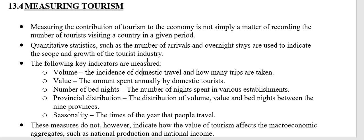Other indicators used to measure the volume of domestic travel include the incidence of domestic travel — how many trips does the average household take? This information can come from a census or from Statistics South Africa. We also want to know the amount spent by domestic tourists: how much money they spend on accommodation, transport, toll gates, and food when away on holiday, because that allows us to calculate the contribution to the GDP.